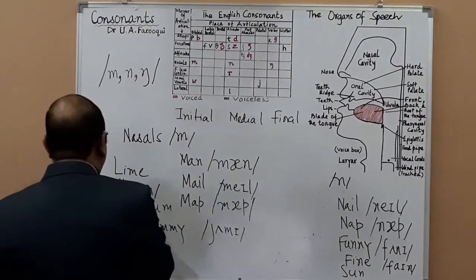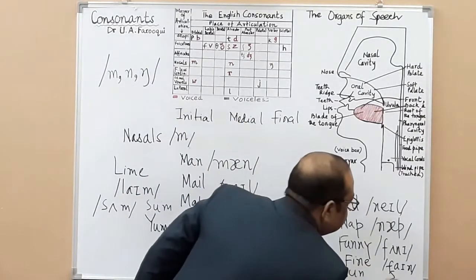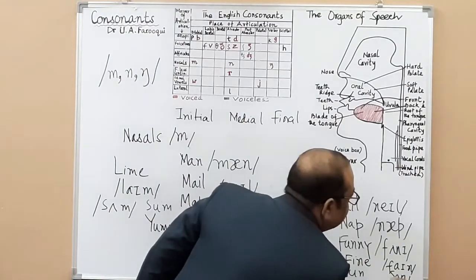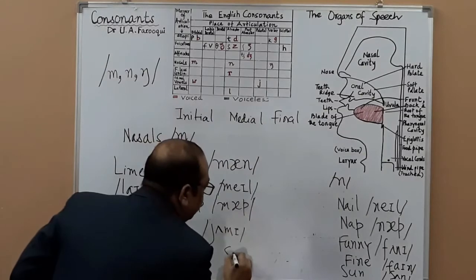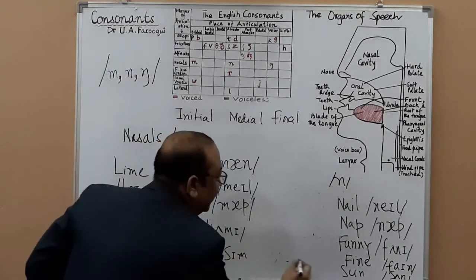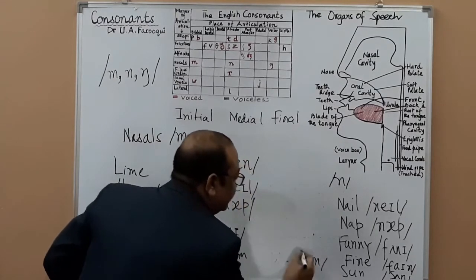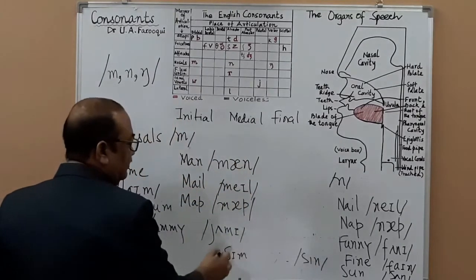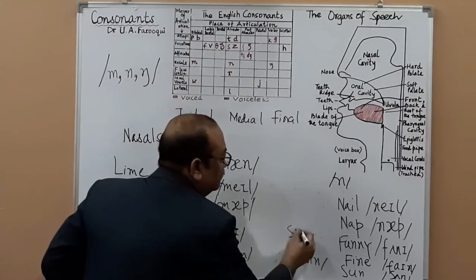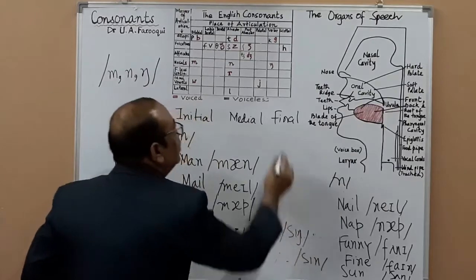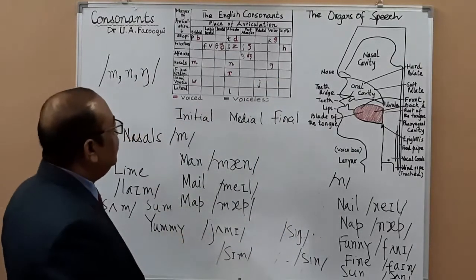This is how it's written: 'some'. And you may have 'same' — same transition. And if you want one more word you can have another word with the /n/ sound as well.